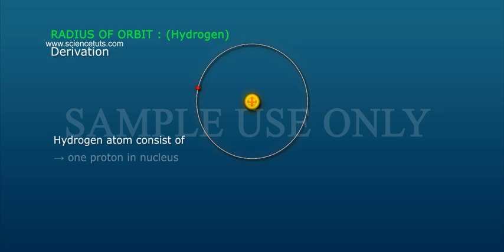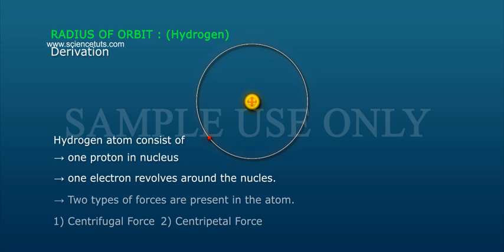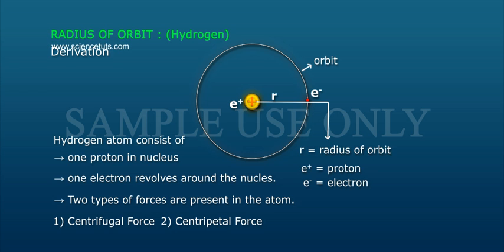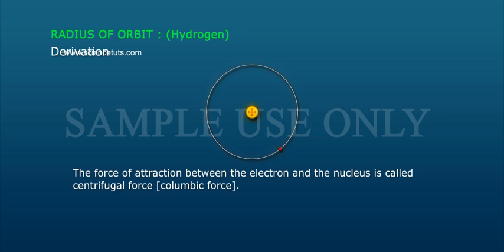Hydrogen radius of orbit derivation. The hydrogen atom consists of one proton in the nucleus and one electron revolving around the nucleus. Two types of forces are present in the atom: one, centrifugal force, and two, centripetal force, the force of attraction.